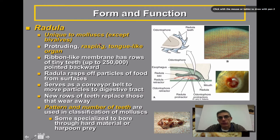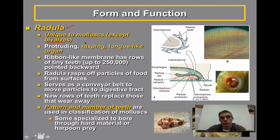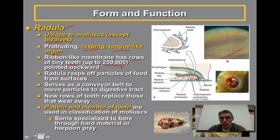One of the most unique and interesting aspects of mollusks, besides their soft body, is a very interesting tongue-like structure called a radula — very unique to mollusks. All mollusks will have a radula except for the bivalves, which would be animals such as clams, mussels, and oysters. The radula is a protruding, rasping, tongue-like organ — you can see it over here on the right-hand side. They push this radula out and it is ribbon-like, with rows and rows of very tiny teeth. Some have up to 250,000 teeth on this radula, and all of these teeth point backwards. The radula rasps or scrapes off particles of food from surfaces — that's how this animal feeds.